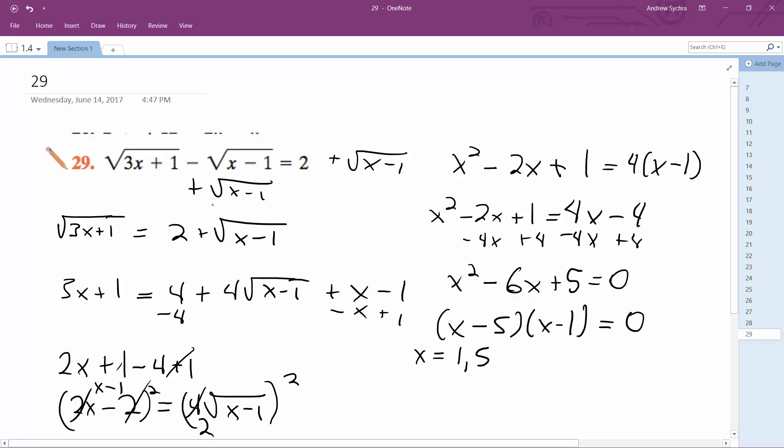But let's check. So 1 and 5, so 5, so that's 15, 16, so that's 4 minus 2. So it ends up being 4 minus 2, which is, excuse me, 4 minus 2 does equal 2, so 5 does work.